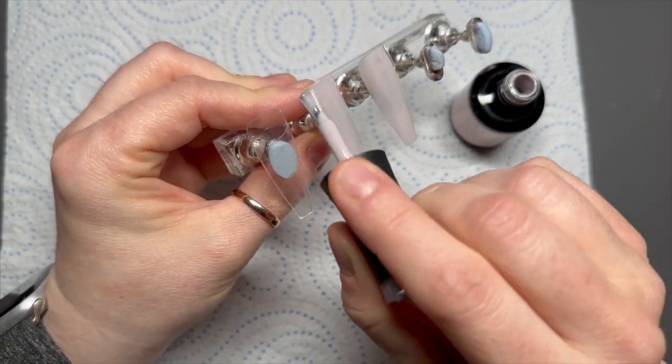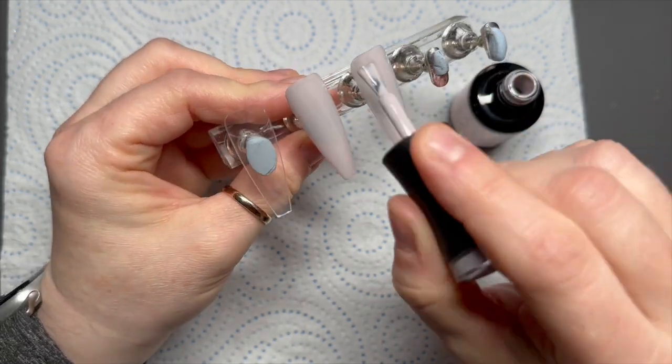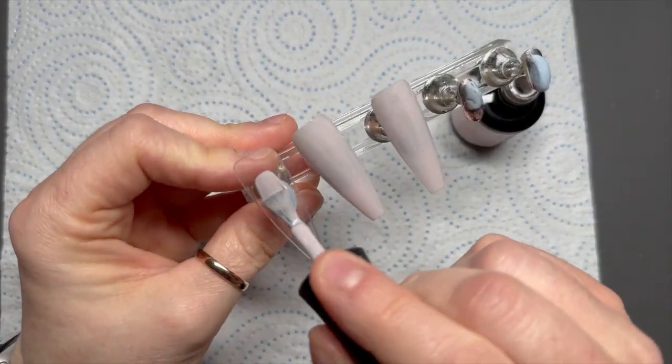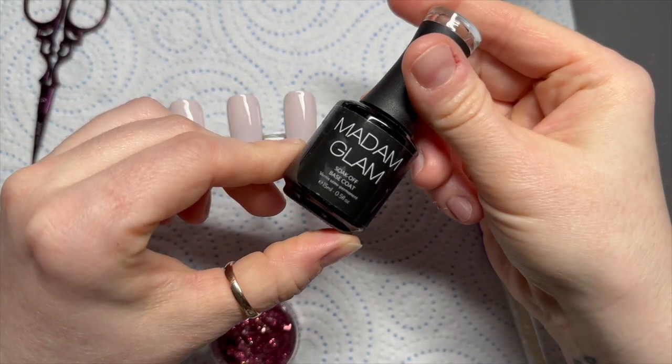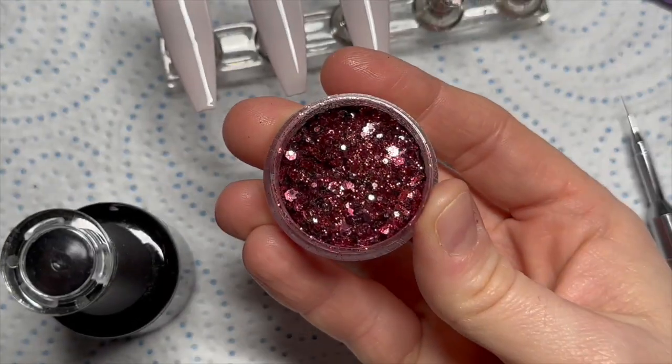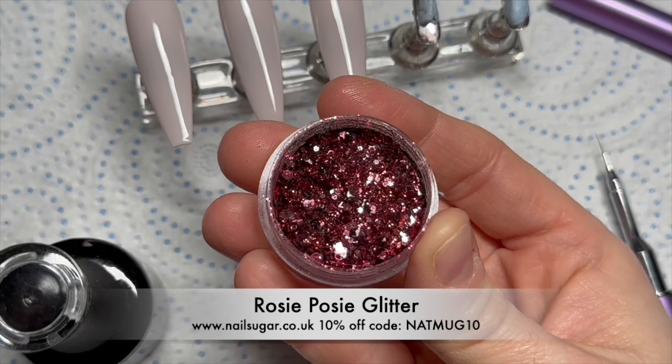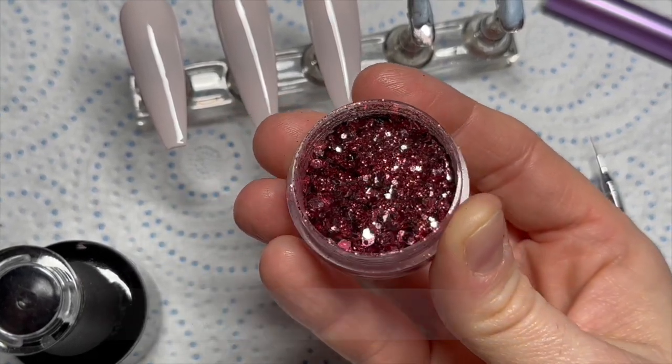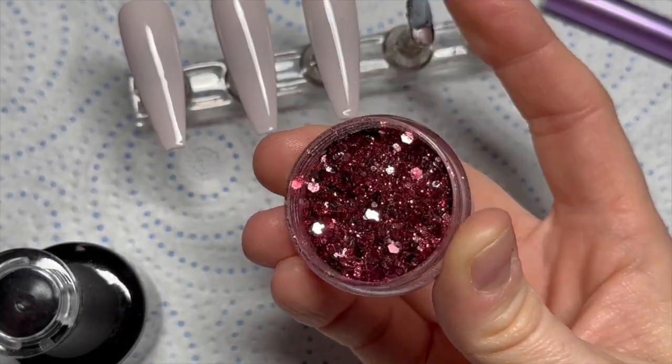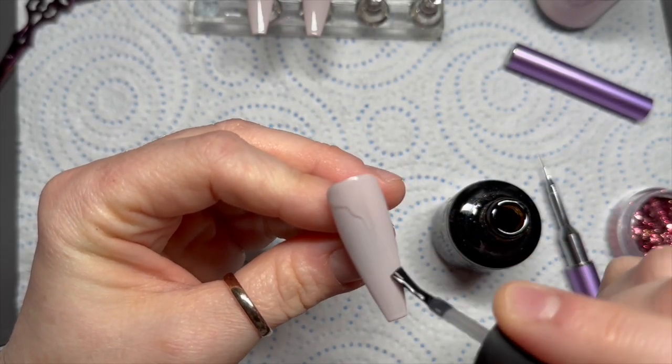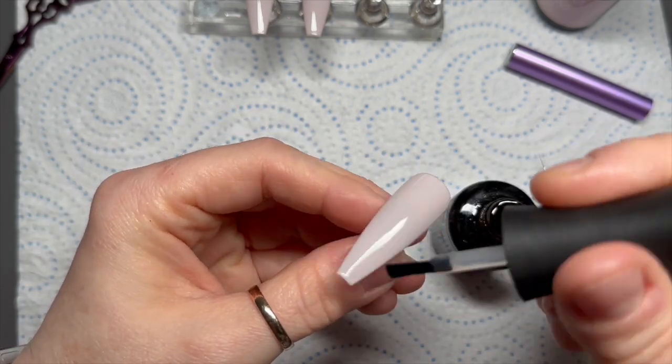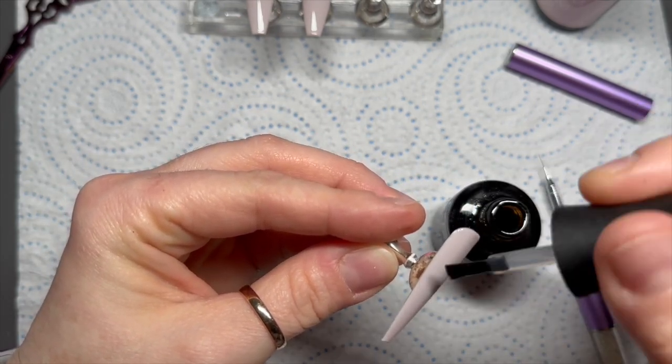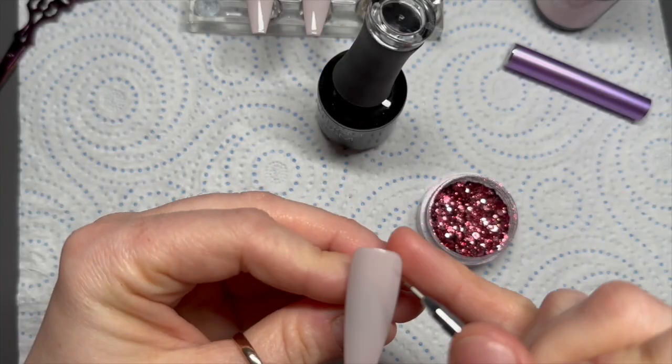Four nails I'm doing, just showing you three here. Two coats, 30 seconds each. We're going to need some base coat because I want to apply some glitter. This is Nail Sugar's Rosy Posy glitter and it's absolutely gorgeous. It's like a red-pink metallic, a chunky mix, really nice. We need to apply this to our gel polish now using some base coat. Add a thin layer of base coat but don't cure this.